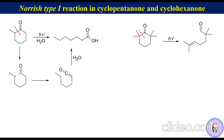The reason is that upon irradiation, the C-C bond alpha to carbonyl breaks to produce an acyl-alkyl diradical. It doesn't have any hydrogen at the alpha carbon to the carbonyl. So there is no possibility for ketene formation. Therefore, the acyl radical abstracts hydrogen from the carbon alpha to the alkyl radical to produce the unsaturated aldehyde.